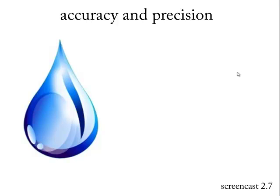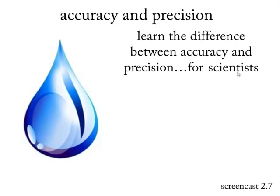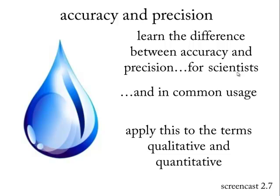They used them interchangeably. So when we discuss this, I'm going to go ahead and show you the scientific viewpoint and the common language viewpoint. This is accuracy and precision. We'll learn the difference for scientists, and let's learn about what the deal is in common usage. Let's apply this to the terms qualitative and quantitative. This is Screencast 2.7.